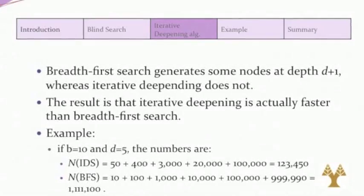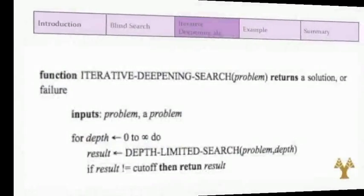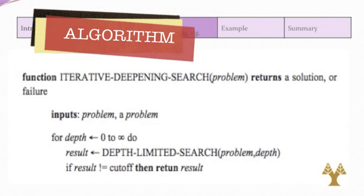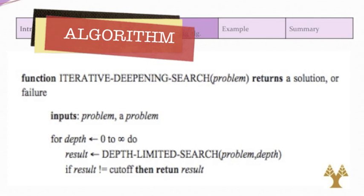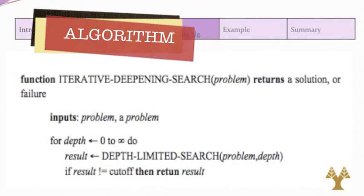Here we see an example. Iterative deepening combines the benefits of depth first and breadth first search. Like breadth first search, it is complete when the branching factor is finite and optimal when the path cost is a non-decreasing function of the depth of the node. The iterative deepening search algorithm routinely applies depth limit search with increasing limits, and terminates when a solution is found or if the depth limit search returns failure, meaning that no solution exists.